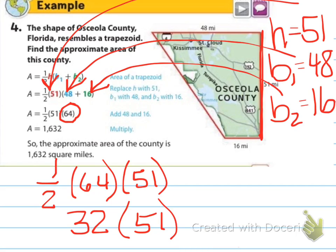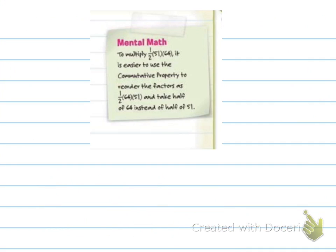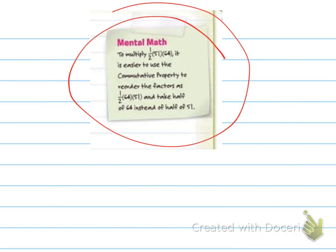Now, I just have to do 32 times 51, which in my world is a lot easier than having to find decimals and fractions. And then when you multiply that together, you get 1,632 miles squared. So, that's just a tip. We're taking our original, we're substituting. Once we get to this point, any time I have an even number with my bases added together or my height, I'm going to make sure that I take care of that 1 half right then and there so I don't have to deal with any more decimals or fractions. And this is a little mental math tip, it tells you that when you're multiplying with 1 half times 51 times 64, it would be easier to use commutative property to reorder the factors so that you have 1 half times 64 times 51 and take half of 64 instead of half of 51.